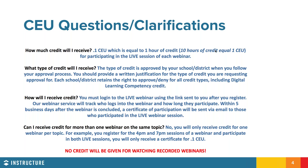For your participation in today's webinar, you will get a CEU certificate for 0.1 CEU, which is equal to one hour of credit. This certificate will be recommended for digital learning competency credit. However, you must follow your local public school unit's process for getting that credit. We cannot give you the credit. You have to follow your local process and submit your certificate along with any other information required. This webinar is being recorded, and within five business days you'll receive an email with your certificate, a copy of the slide deck, and a link to the recording.